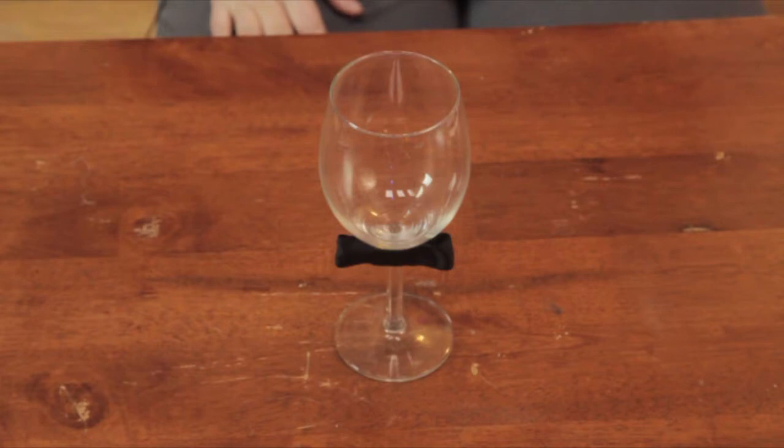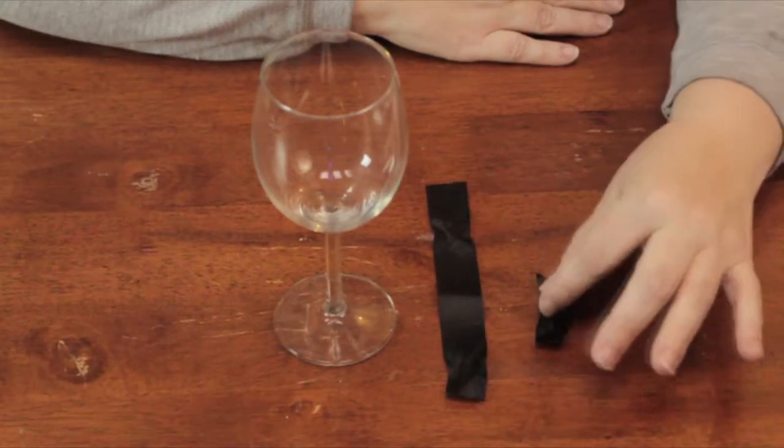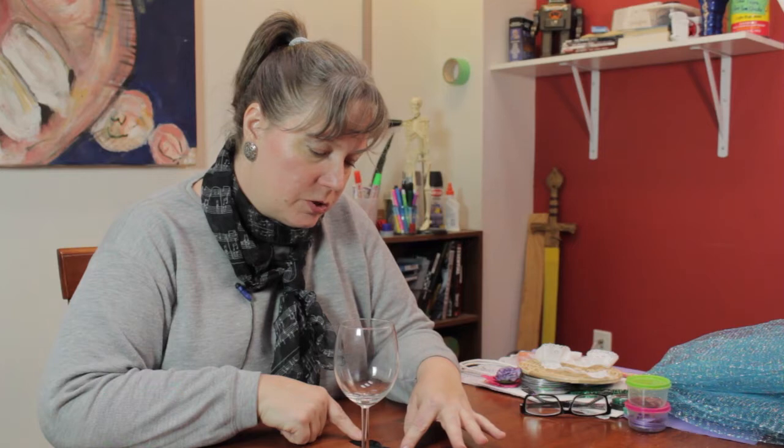I have here a wine glass, some grosgrain ribbon in black, a longer strip and a shorter strip. You don't have to have an exact measurement depending on how long or how wide you want the bow tie. You can just kind of eyeball it. But if you wanted to measure it, I'd say roughly 6 inches and 2 inches.